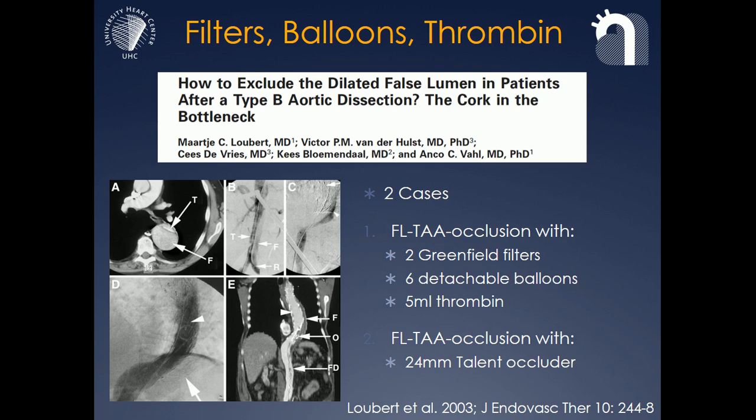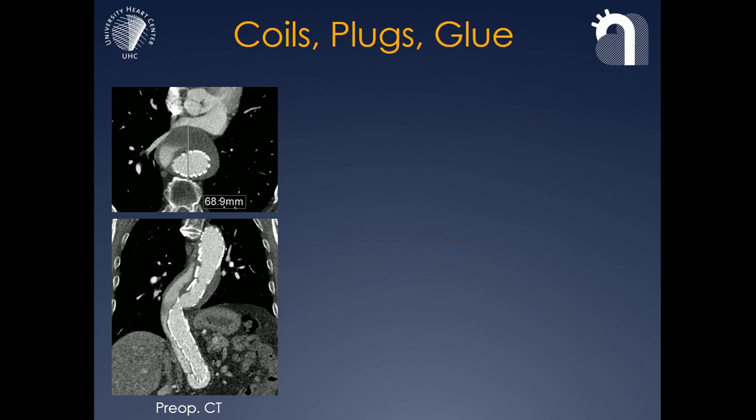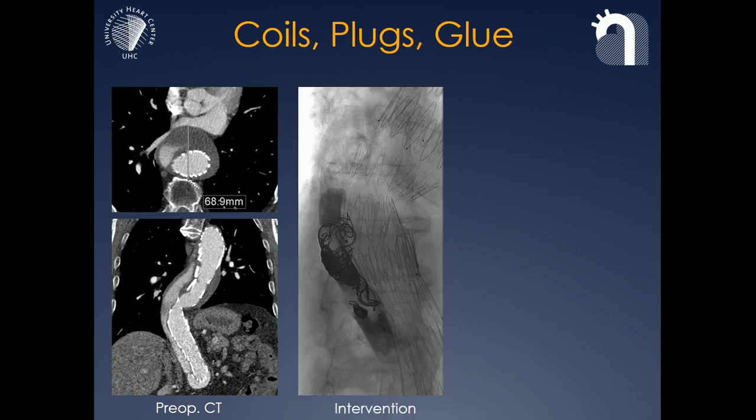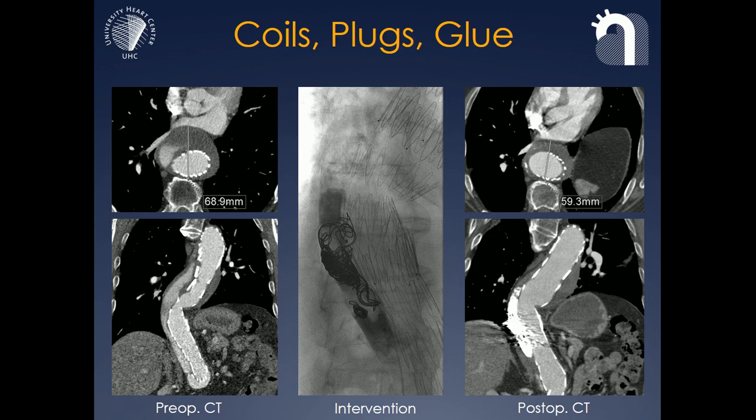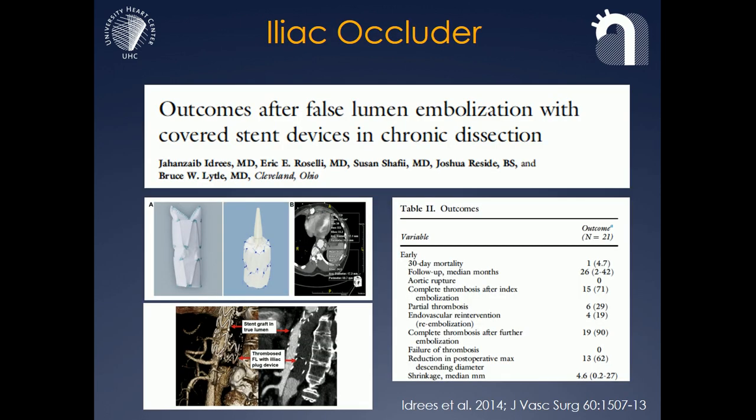They also used talent occluders. We have done that for a number of years in cases such as this one with a 7-centimeter false lumen aneurysm and retrograde flow, as you see on the lower image, using materials like coils and plugs and glue to obstruct the false lumen backflow, and as you see in this image here, with quite good success in most cases.